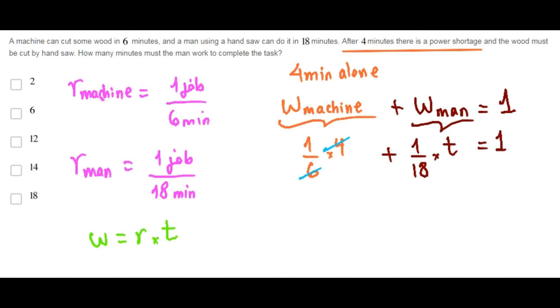Now, solving for t, this is 2 thirds. Finally, you have that t over 18 is a third. Therefore, t is 6 minutes.